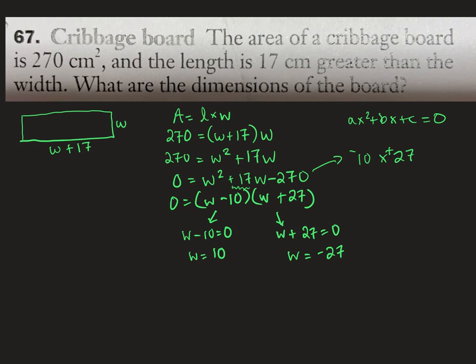But it is a real life question, and W represents a width. So it doesn't make any sense that it would be negative. So can't have negative width is what I would write beside that so we know why we're crossing it off.